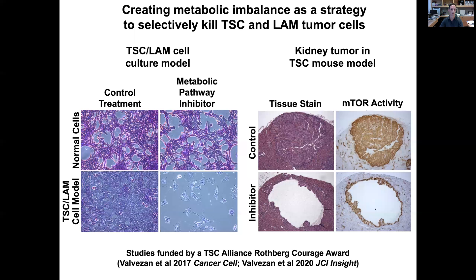Here is one piece of data from our lab showing this scenario in practice. We're looking at normal cells on the top and a TSC cell model on the bottom. We've either treated with a control or with a very specific metabolic pathway inhibitor that inhibits one of the metabolic pathways downstream of mTOR — but not all of them. What we see is selective killing of the TSC cells — these cells are dying, while the normal cells are still healthy. We never see this when we treat with rapamycin; they just slow their growth and get smaller, but they don't actually go away like we're seeing here.